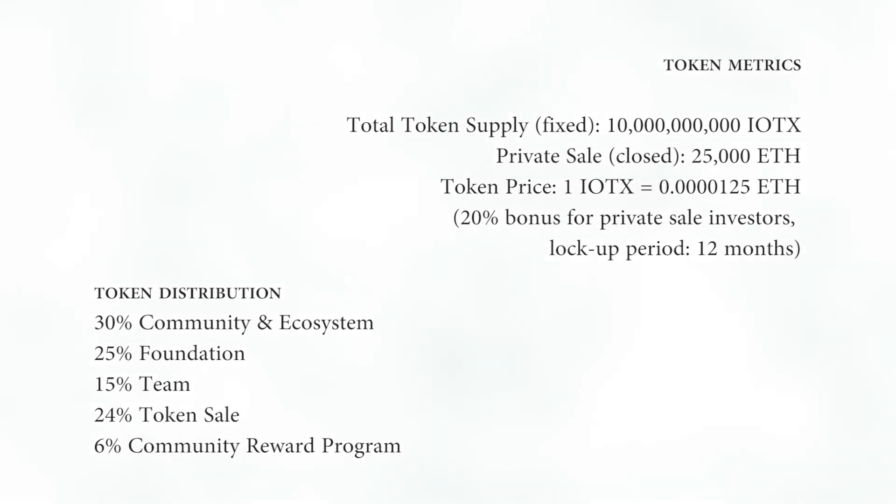The price of one IoTeX token is 0.00125 ETH. The total number of issued tokens will be 10 million. The plan for their distribution is as follows: 24% for sale, 15% for the team, 20% for the fund, 30% for the community and ecosystem, and 6% for the bounty.